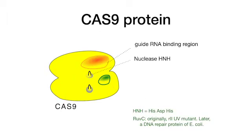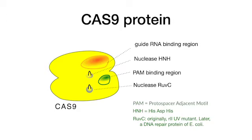This is the first nuclease domain called HNH. This is the PAM binding region, which is involved in DNA recognition. And finally, this is the second nuclease domain called RuvC. The detailed names come from the history of the domain — they are easy to forget, but do not worry about it.